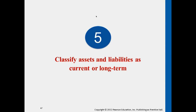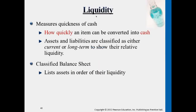This liquidity — how we classify assets and liabilities is based on the liquidity of these different types of accounts. Meaning how quickly a type of asset, or how quickly a type of liability turns into a cash receipt or cash payment, will determine whether it's a current liability, long-term liability, current asset, or a long-term asset.